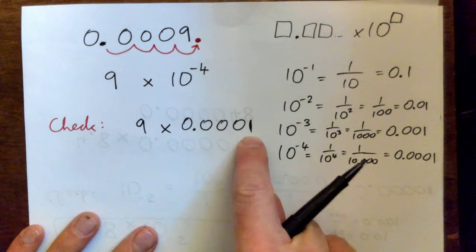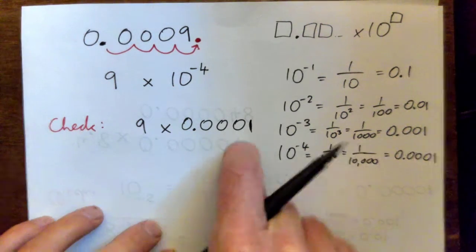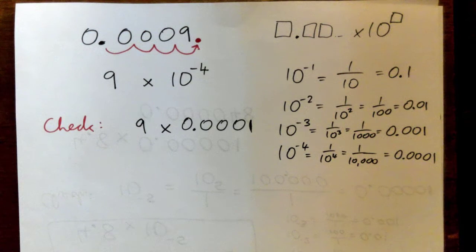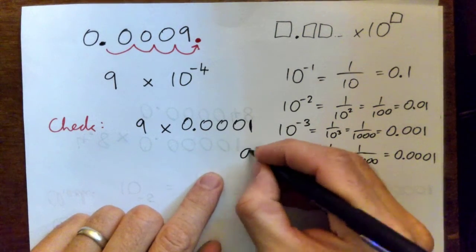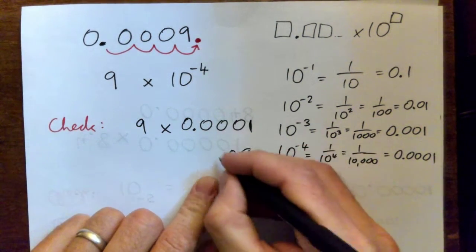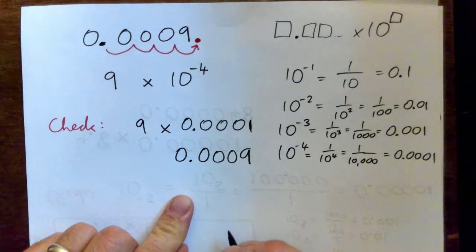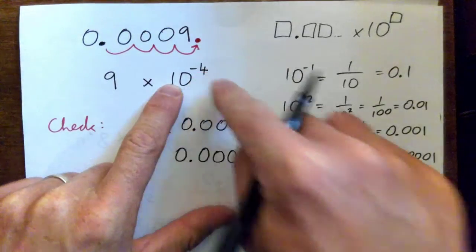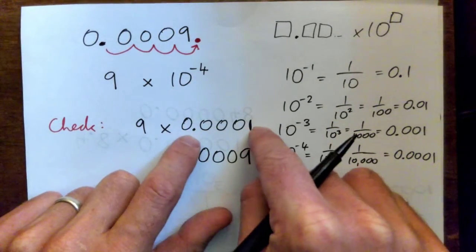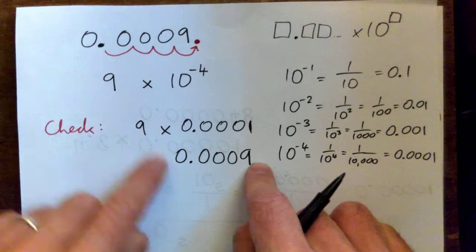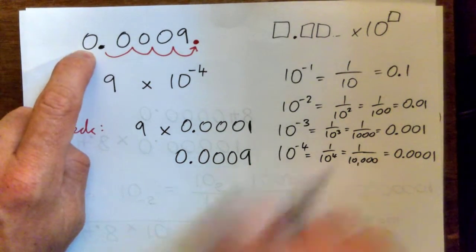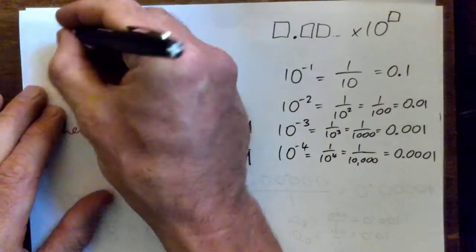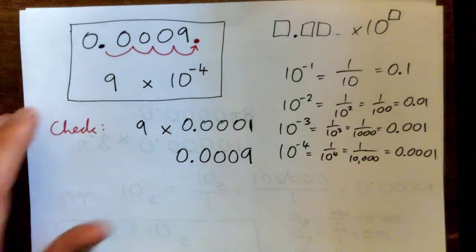So 10 to the negative 4 is 0.0001, and we have 9 times that. The 9 would multiply by the 1 and you'd just get a 9 there, and everything else stays the same. So 9 times 0.0001 gives us 0.0009 — exactly what we started with. That confirms that this decimal written in a different way is 9 times 10 to the negative 4. That's correct — that's all.